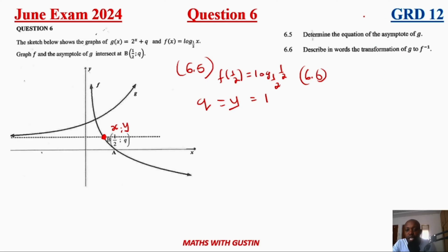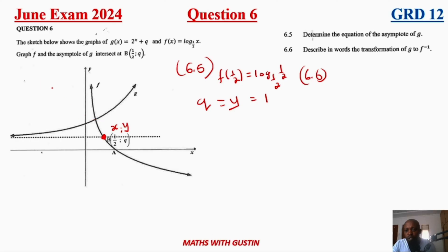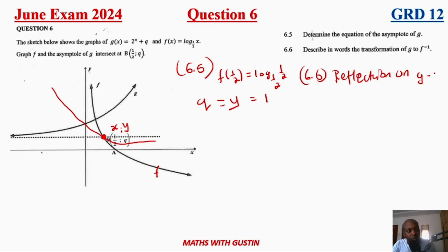Question 6.6 asks us to describe the transformation from g to f inverse. The curve f inverse is sitting lower. What happened is: first, they took f(x) and reflected it on the y-axis — that's a reflection on the y-axis. Then they shifted it down by one unit.